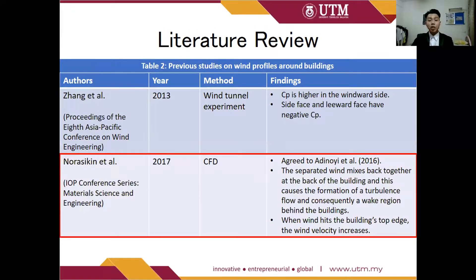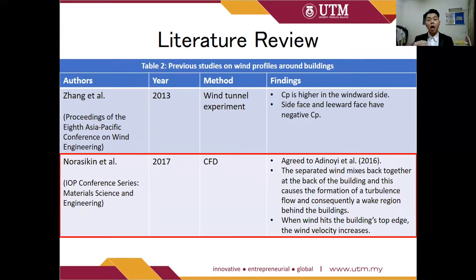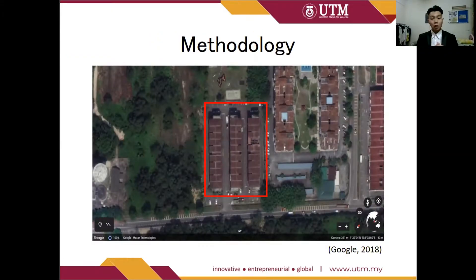Norris et al. agreed with Adinoye et al. and added a few points. The separated wind mixes back together at the back of the building, causing the formation of turbulent flow and consequently a large wake region behind the buildings. They also stated that when wind hits the building top edge, wind velocity increases.